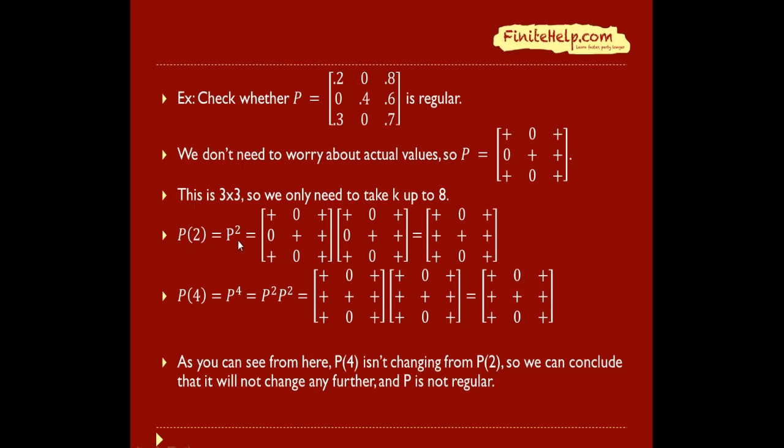So we first do P2, P squared, and we multiply these. You take this times this, plus this times this, plus this times this for this number, so we have a plus here. If either one of them is non-zero, then non-zero plus a bunch of zeros is still going to be non-zero. Here we have this as the result, this is P2, and P4 is P2 times P2.